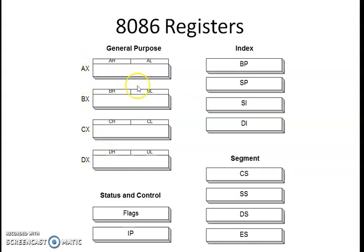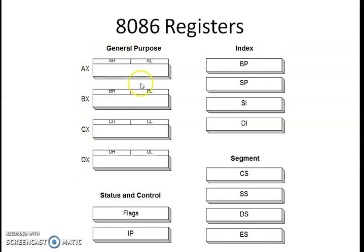These registers are used for storing temporary results during any computation. With general purpose registers we have the flexibility of using them as either 16-bit registers or as 8-bit registers. The same AX register can be used as a 16-bit register or as two 8-bit registers: AL (lower byte) and AH (upper byte). As 16-bit registers they are AX, BX, CX, DX; as 8-bit registers: AL, AH, BL, BH, CL, CH, DL, DH.